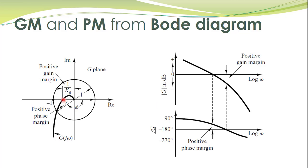From the polar plot, we located the point with phase angle of 180 degrees to determine gain margin. In the Bode diagram, we locate this same point, which has phase angle of minus 180 degrees. The gain corresponding to this point is read from the magnitude plot and is less than 1 (below the 0 dB line), so the required gain to reach the critical point is the gain margin.